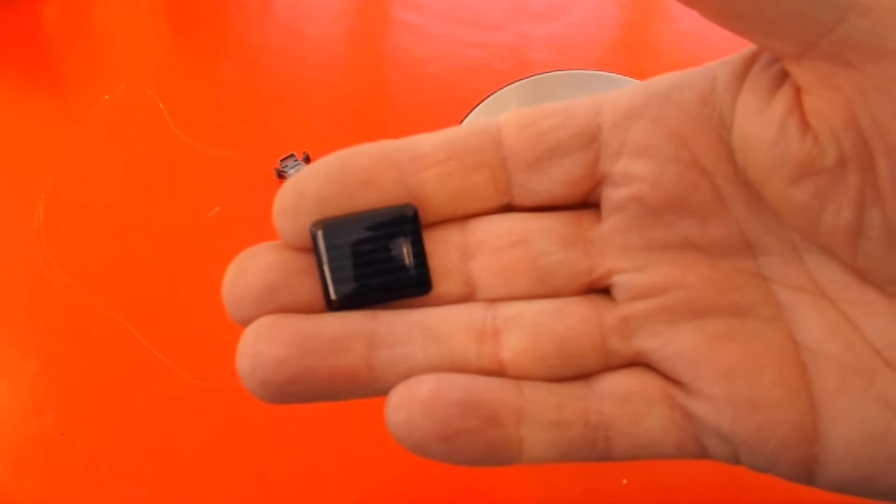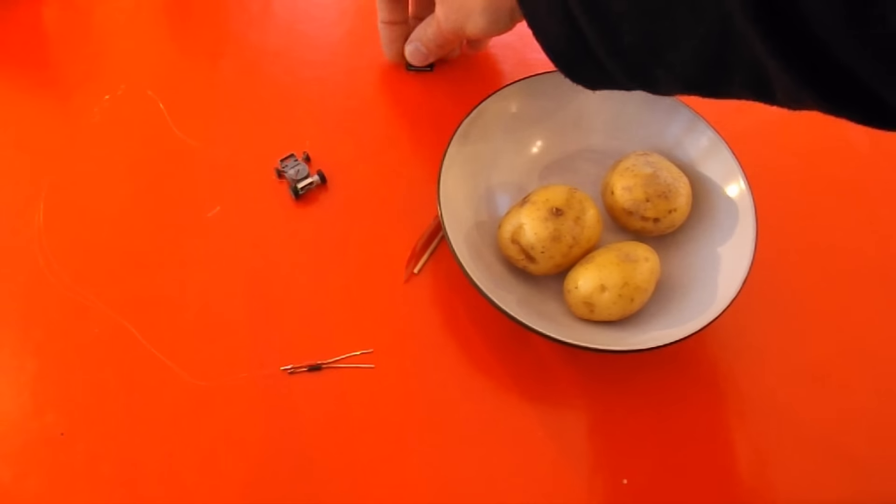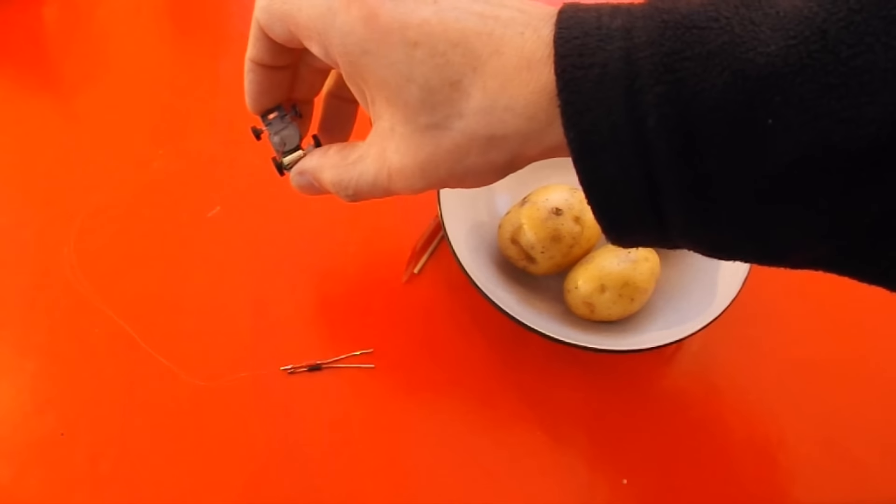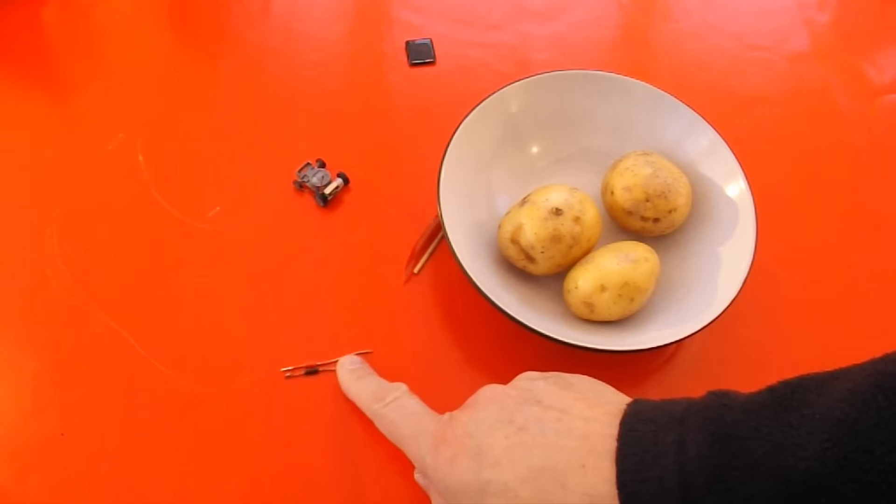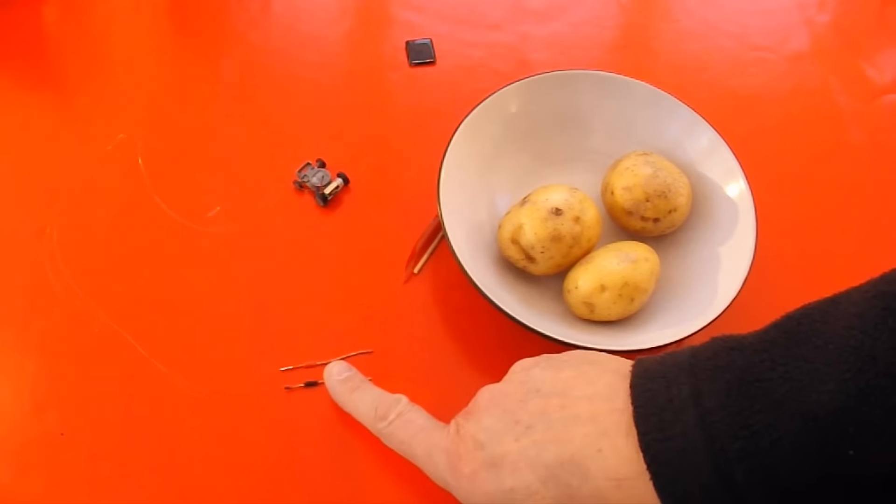That's the solar cell that goes on top of it. So I've soldered directly onto the motor leads. Very thin bits of wire again.